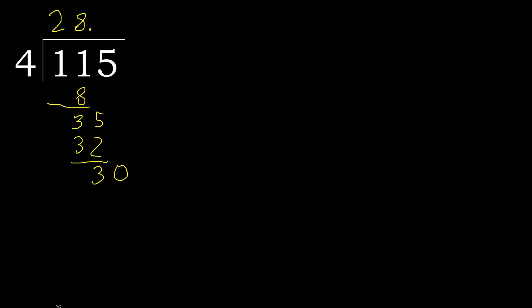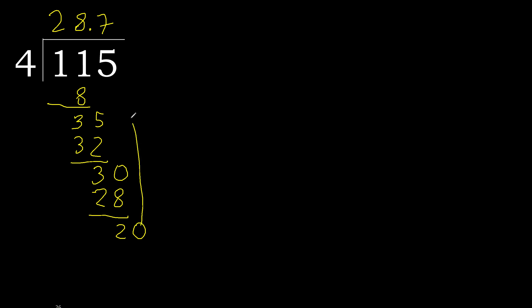4 multiplied by 8 is greater. 4 multiplied by 7 is 28, which is not greater. So 30 minus 28 is 2. Complete — add another 0 after the decimal point, giving 20.